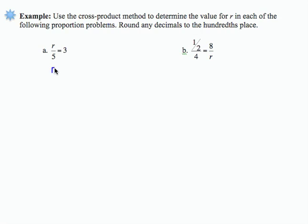R over 5 equals 3. I'm going to rewrite that as R over 5 equals 3 over 1. And because my unknown is in the numerator,